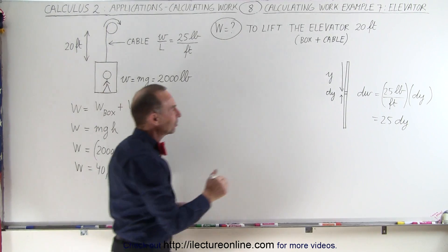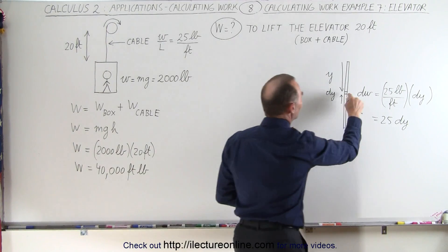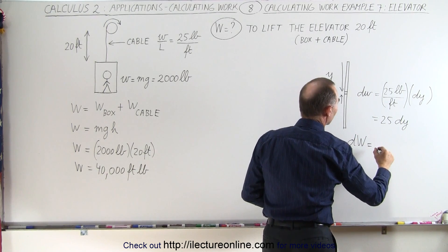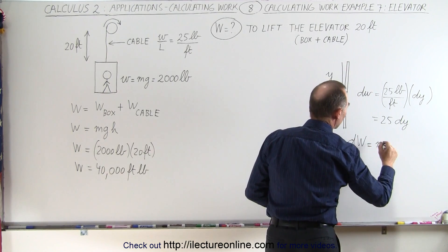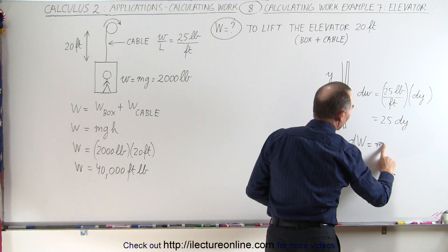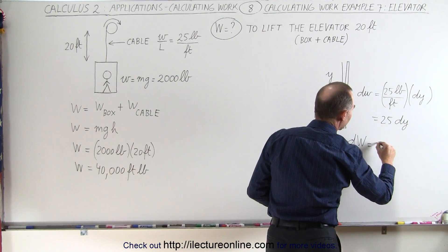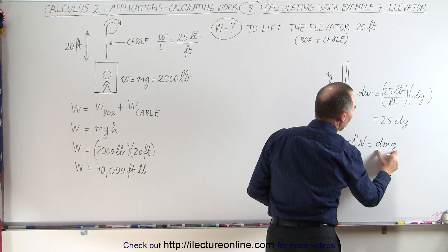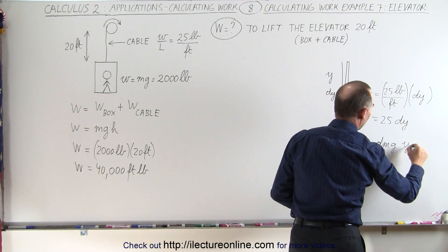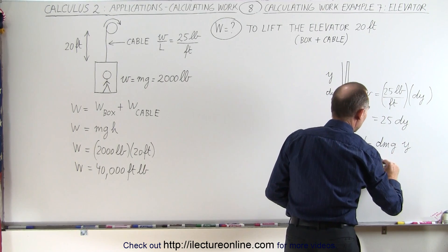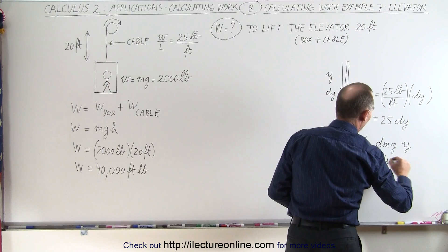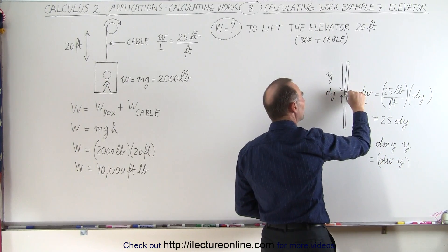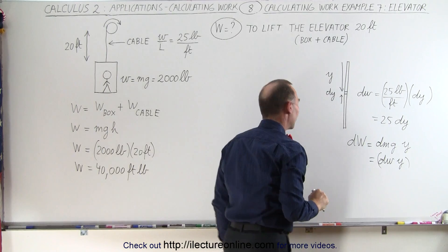So how much work does it take to lift that small piece up to the top? We can call that a dW, and the dW is going to be the small weight dw times the height y. So dm times g is dw, giving dW = dw × y = 25 dy × y. That's the amount of work done to take the small piece and lift it up a distance y.